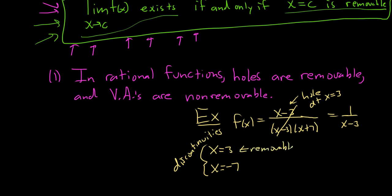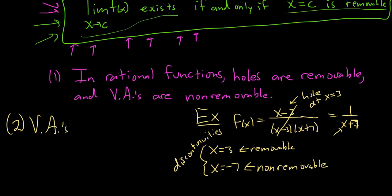At x equals negative 7, you have a vertical asymptote, and vertical asymptotes are always non-removable. We kind of already knew this intuitively because the canceling is the removal process. More generally, vertical asymptotes are non-removable in general — this also applies to trigonometric functions. If you have a trig function with a vertical asymptote, it will be non-removable.